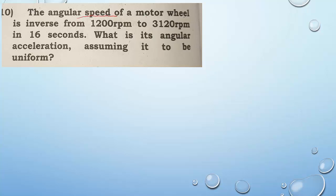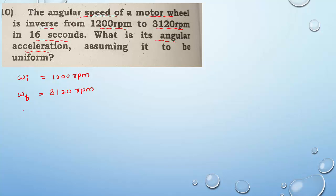Next question: the angular speed of a motor wheel increases from 1200 rpm to 3120 rpm in 16 seconds. What is its angular acceleration, assuming uniform acceleration? The initial angular velocity ωi = 1200 rpm and final ωf = 3120 rpm. Time is 16 seconds. We have to find angular acceleration α. First, convert rpm to radian per second.